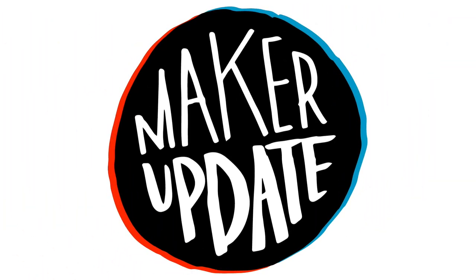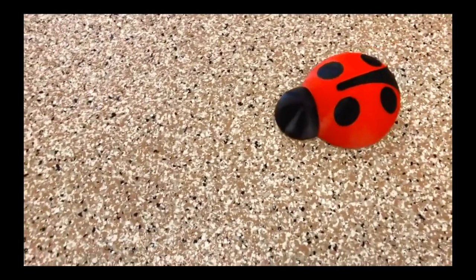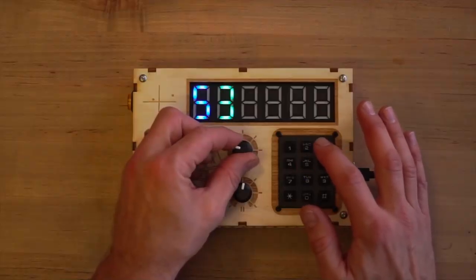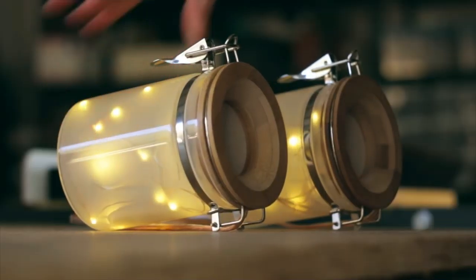This week on Maker Update, gift-worthy projects like this RC ladybug, a high-tech puzzle box, fairy light bluetooth speakers, and a foam core constellation lamp.